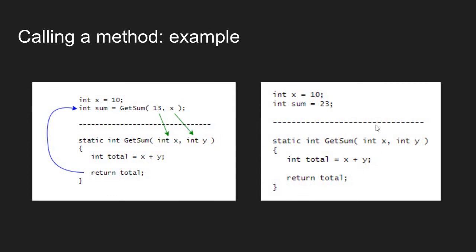After the getSum method does its calculation — the sum of 13 and 10 — it returns the value 23 to main. You can think of the method call as being replaced with the return value. So after getSum executes, I have the value 23 that was returned, which I can save into a variable in main and use going forward. I could also call the getSum method again and again as needed.